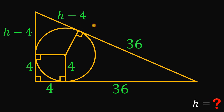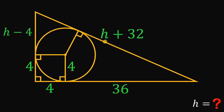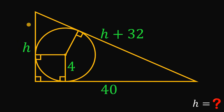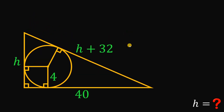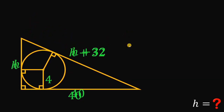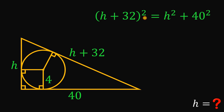If we combine these, h minus 4 plus 36 gives us h plus 32. This is now the length of the hypotenuse of this right triangle. Going back to our figure: this side is h, this side is 40, and the hypotenuse is h plus 32. Since it is a right triangle, we can now use the Pythagorean theorem.